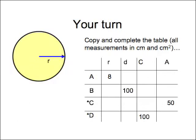Your turn. Copy and complete this table. In a second, you might want to pause this video to give you time to work out the various calculations. Each row is a different circle. Each column you can work out given the information provided. The two rows with stars on them, C and D, are quite hard and require reverse operations on the formulas. You might want to pause the video now.